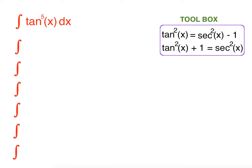Let's start. As our first step we are going to break tangent fifth of x into squared form: tangent squared of x squared times tangent of x dx. So we can utilize our identity.